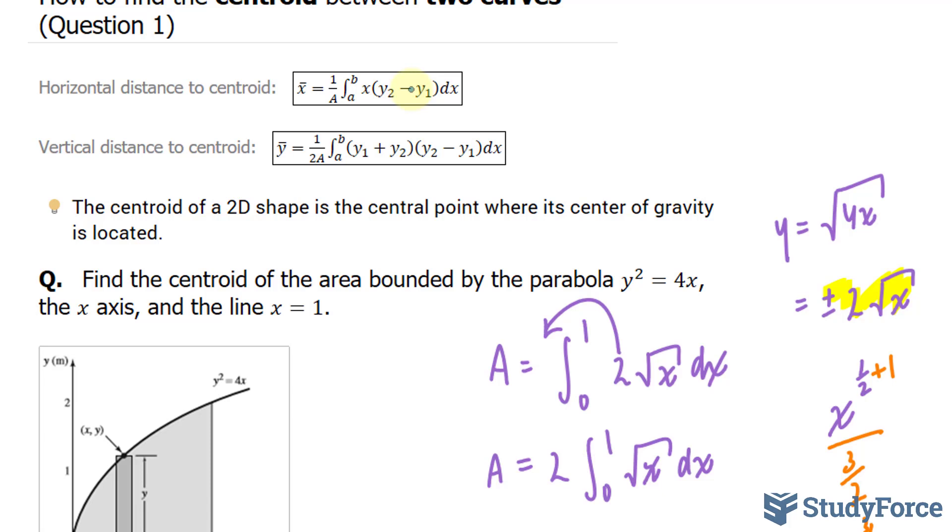In our case here, the upper curve is positive 2 times the square root of x, and the lower curve is 0, because if you draw a horizontal line along the x-axis, that gives you y is equal to 0. And similarly, A represents the same thing here between 0 and 1. We'll add 0 to this function, y1 plus y2. And similarly, I'll take my function here and subtract it from 0 again.